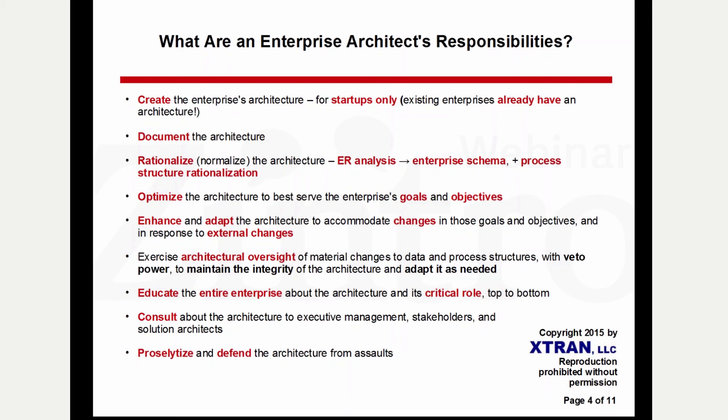So we've got our architecture optimized, but things change. There are two main sources of change. One is that the goals and objectives of the enterprise may change — a business issue, a strategy issue, or external changes such as regulations in a regulated industry, natural disasters, or changes in market trends. The enterprise architect has to keep the architecture fluid and adaptive to changes that come along.